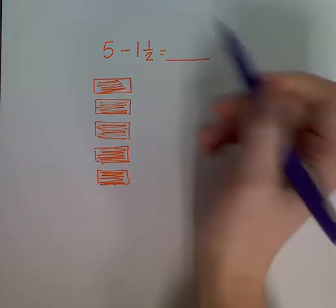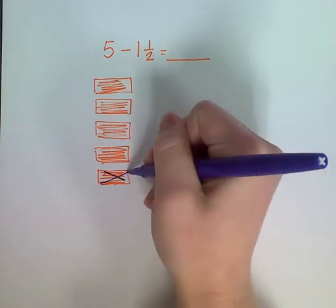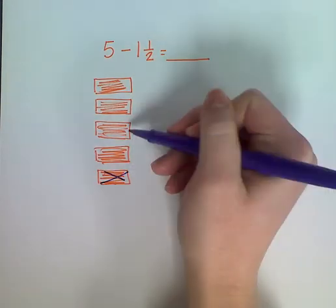I have one and a half I need to take away. This one represents one whole. I'm going to cross out one whole. Now I have four wholes left.